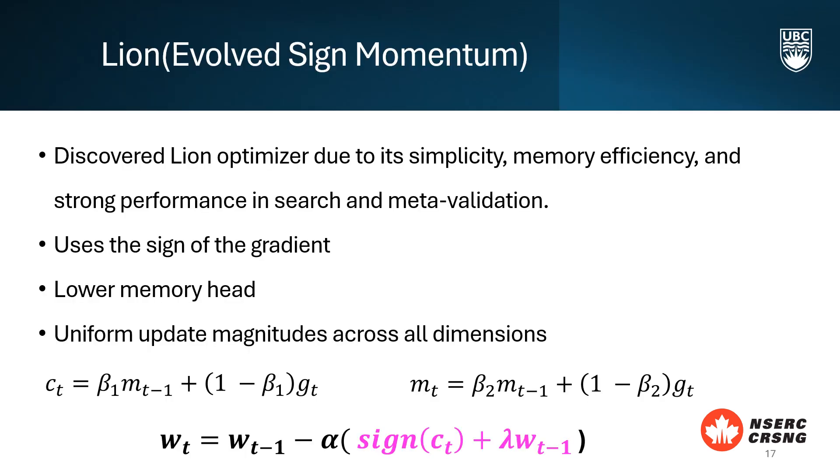This is the LION algorithm discovered through the steps we saw earlier. LION stands for Evolved Sign Momentum. Arriving at the LION optimizer was due to its simplicity, memory efficiency, and strong performance in search and meta-validation. It only keeps track of the momentum.